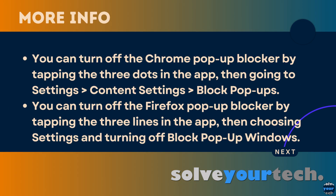If you use the Google Chrome browser app on your iPhone, you can turn off the pop-up blocker there as well. Simply open the Chrome app, tap the three dots, choose Settings, then Content Settings, then Block Pop-ups, then tap the button to the right of Block Pop-ups to turn it off.